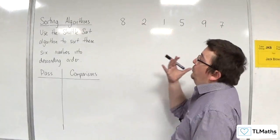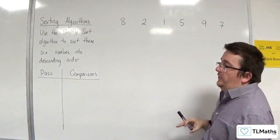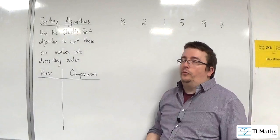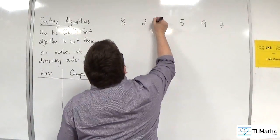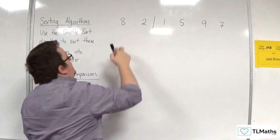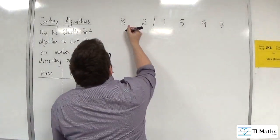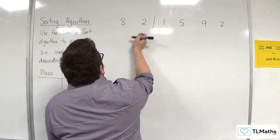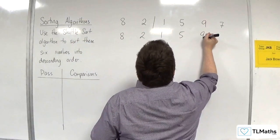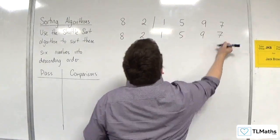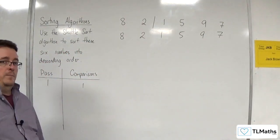Let's sort these six numbers into descending order using a shuttle sort. The first thing is to look at the first two numbers in the list — they are already in descending order. So one comparison has been made in the first pass. The order of the list is 8, 2, 1, 5, 9, 7.